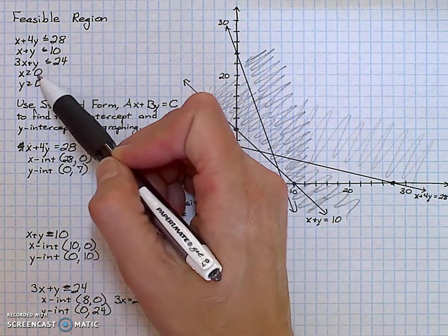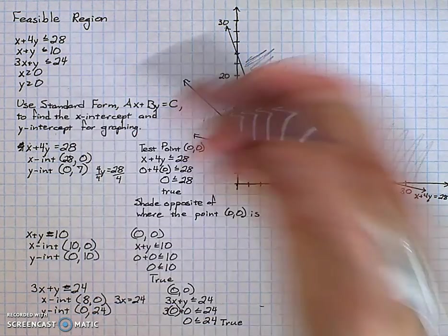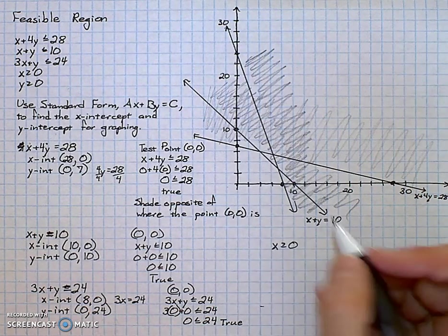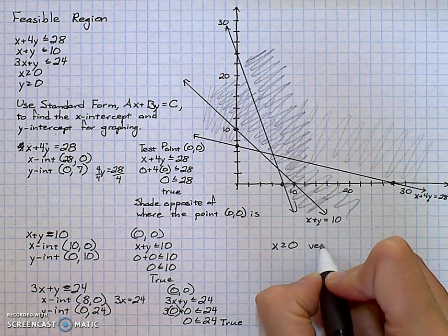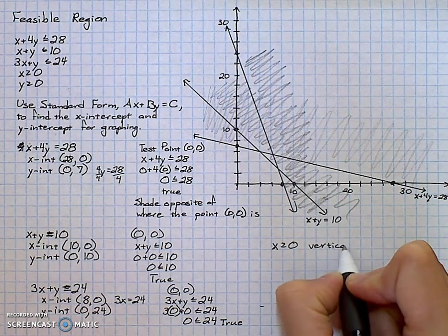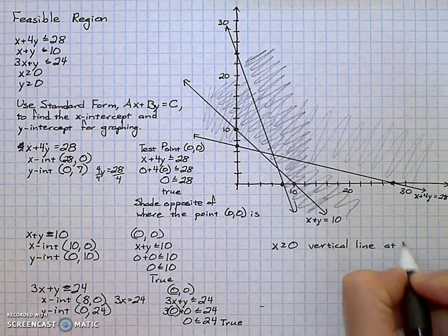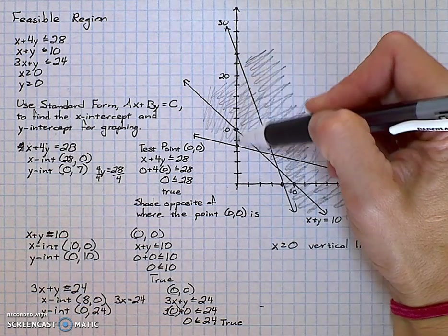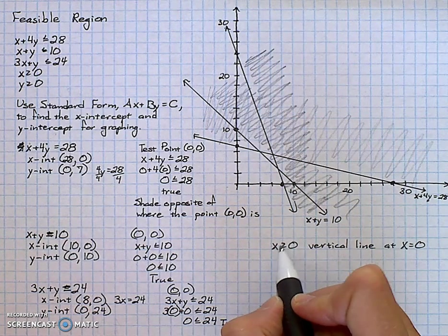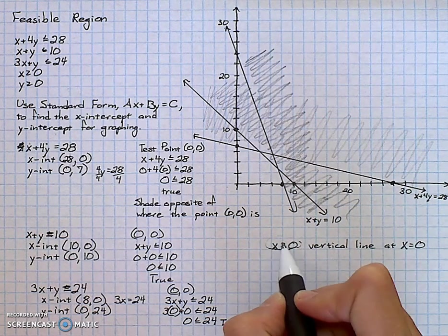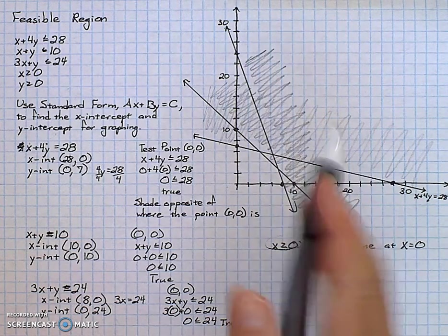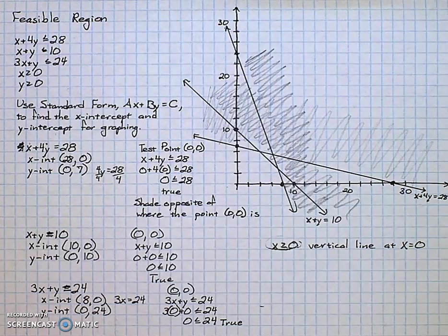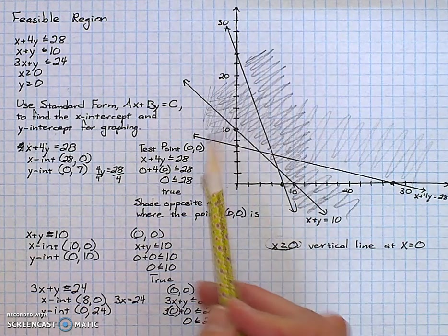My fourth inequality is x is greater than or equal to 0. This is a vertical line at x equals 0. So it's really the y-axis. If I were to look at the original inequality, it says x is greater than or equal to 0. So the opposite of greater than or equal to or the false region would be to the left of my vertical line.